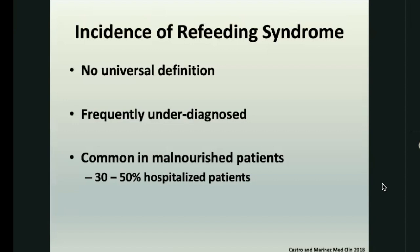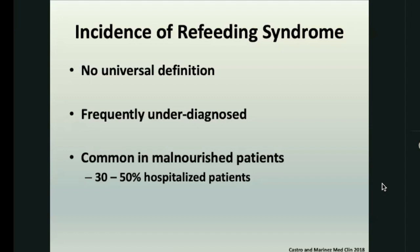Looking at the incidence of refeeding syndrome — there is no universal definition, which makes it difficult to gather literature across disciplines. We know it's frequently underdiagnosed and still denied by many in the clinical field. It is very common in malnourished patients, with an incidence of about 30 to 50 percent in hospitalized patients. Across studies in ICU patients and those on PN or EN, the incidence of refeeding hyperphosphatemia or refeeding syndrome ranges from about 2 percent up to 80 percent.